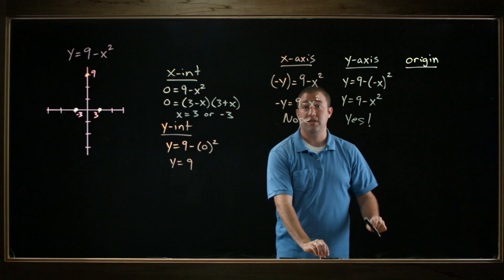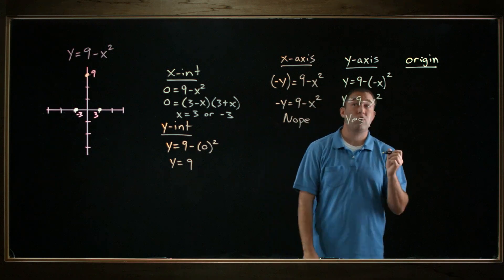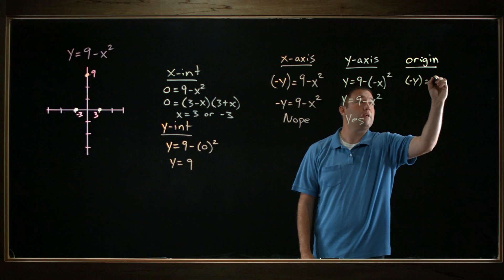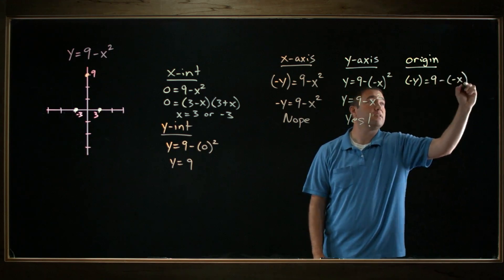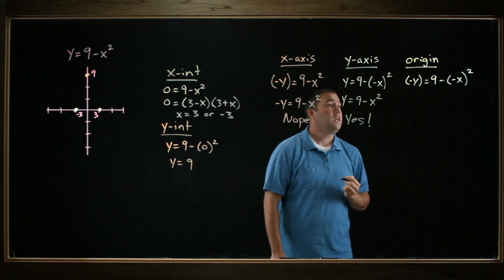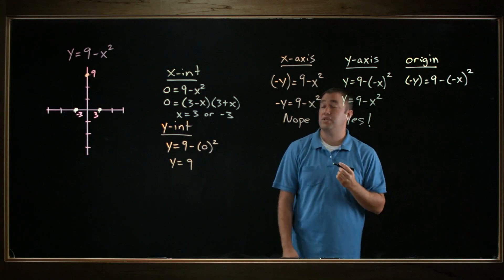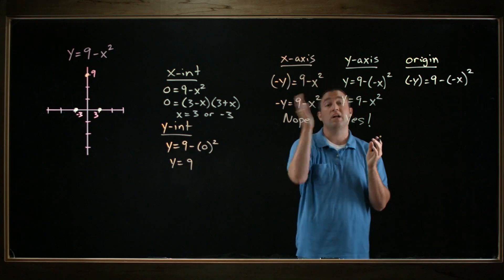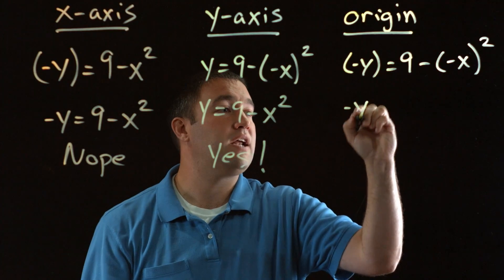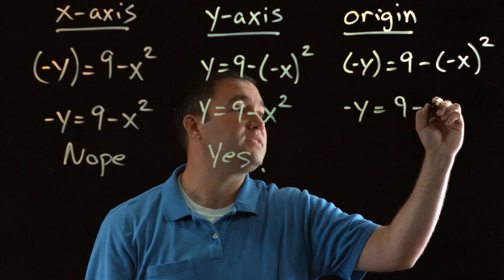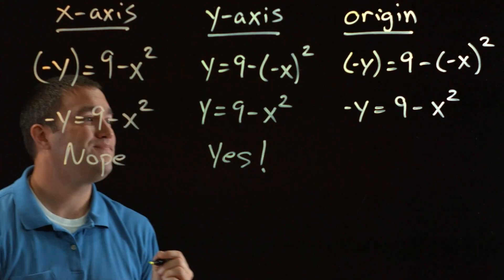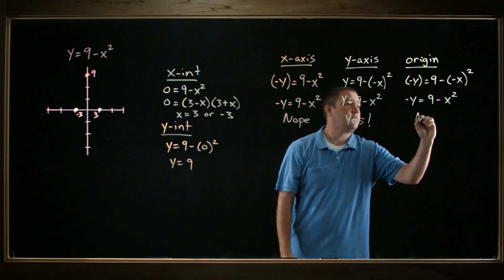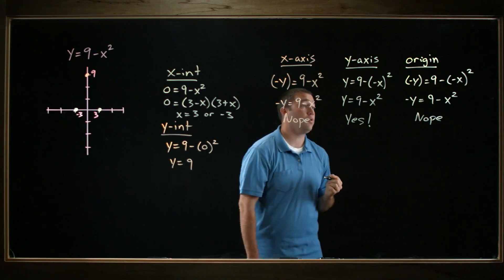The last one to check is symmetry about the origin. Here I replace both y with negative y and x with negative x. If I do both of those and get the original equation, then it's symmetric about the origin, meaning it looks the same if I rotate it 180 degrees. Let's check — I get negative y equals 9 minus x squared. That's not the same as the original equation, so it's not symmetric about the origin.